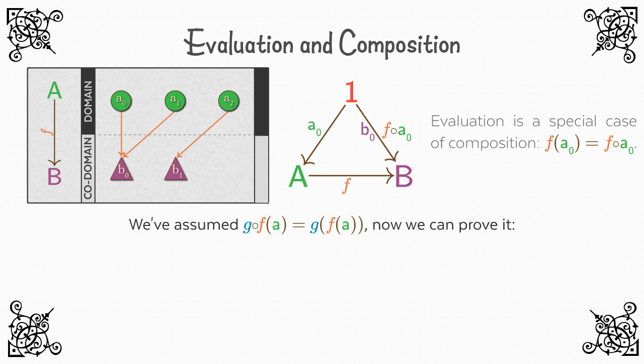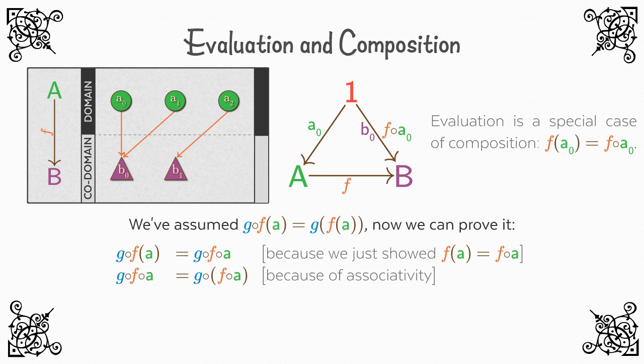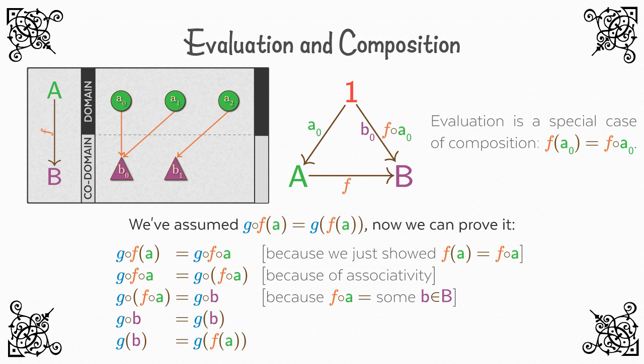So g following f of a is equal to g following f following a, because we just showed that f of a is equal to f following a. And g following f following a is equal to g following (f following a) because of associativity. And g following (f following a) equals g following b, because f following a is equal to some b in B. And g following b is equal to g of b. Again, we just showed this.